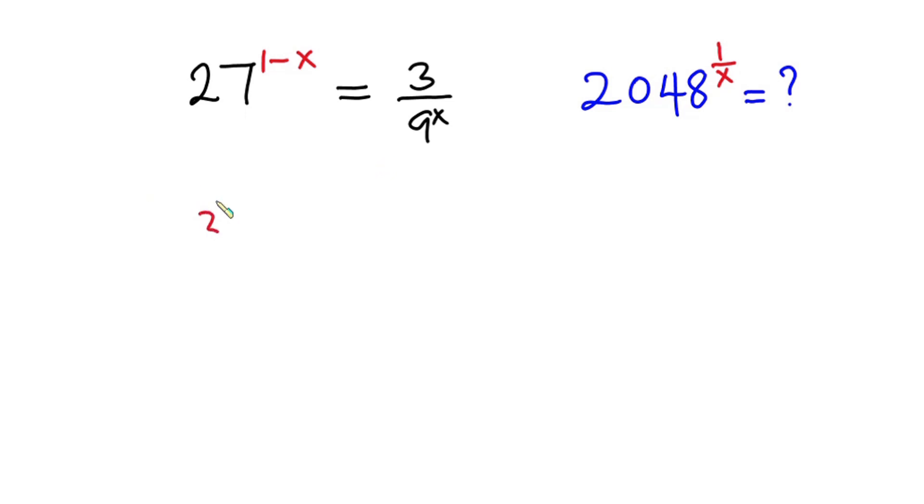27 is the same as 3 to the power 3, then we have 1 minus x, and this is equal to 3 over 9, which is also the same as 3 to the power 2, or to the power x.